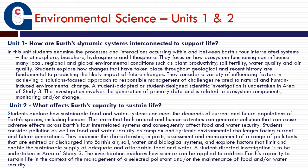Now let's look at Environmental Science Units 1 and 2. In Unit 1 we look at how Earth is a dynamic system interconnected to support life, examining processes and interactions in the atmosphere, biosphere, hydrosphere, and lithosphere. We focus on ecosystem function, the geological time scale, and how we can use the past to predict changes in Earth's future. In Unit 2 we look at what affects Earth's capacity to sustain life — exploring sustainable food and water systems to meet the demands of growing populations, and learning about natural and human activities that generate pollution and have adverse effects on the environment and future generations.